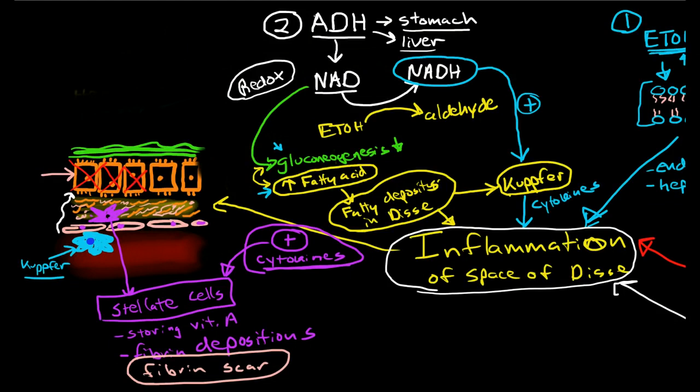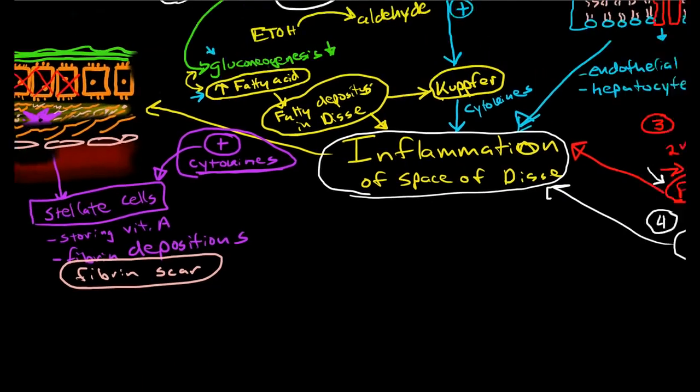And number two, the space of Disse actually gets bigger and thicker because it's filling up with this overgrowing, hyperactively growing scar. So what we end up doing is we end up moving the entire system here. And we end up having a much bigger space of Disse that's filled with scar. And what that does is it narrows the lumen of the sinusoid considerably.